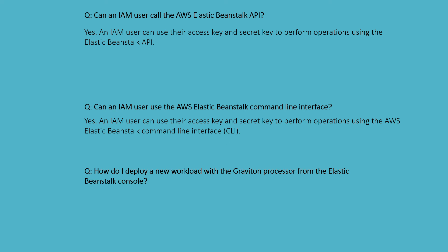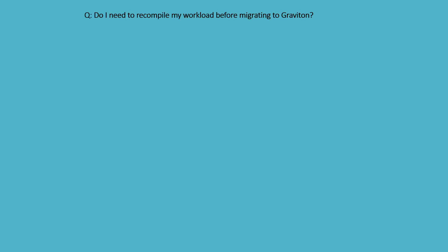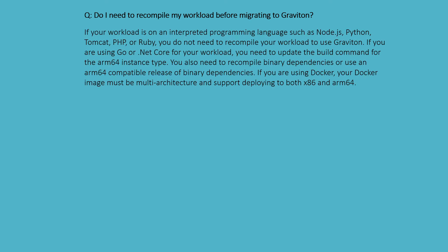How do I deploy new workloads with the Graviton processor using the Elastic Beanstalk console? To deploy your application on an ARM64-based processor on the Elastic Beanstalk console, you can select the processor architecture type from the capacity configuration in the configure settings. If your workload uses an interpreted programming language such as Node.js, Python, Tomcat, PHP, or Ruby, you do not need to compile your workload to use Graviton.